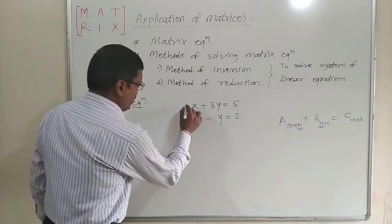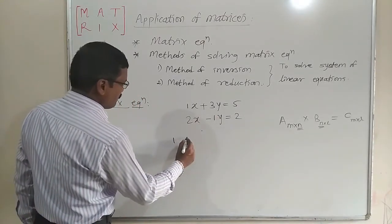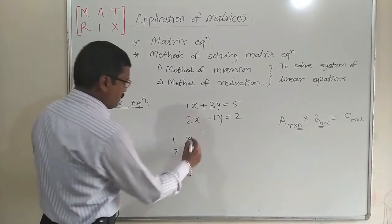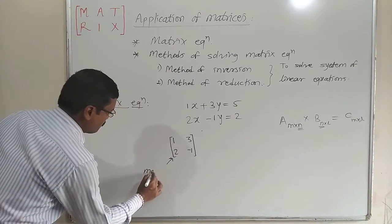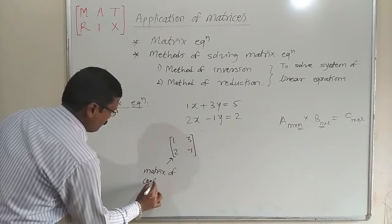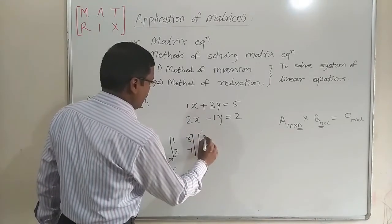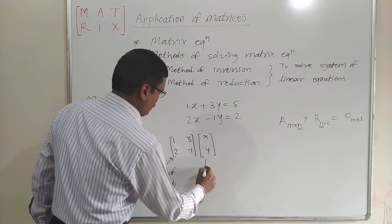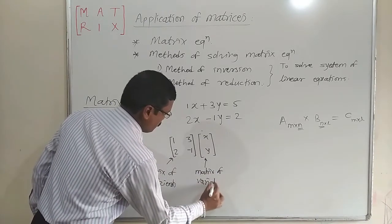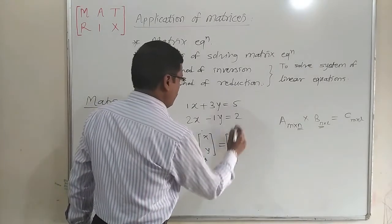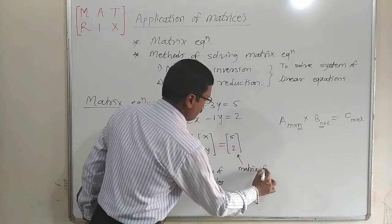Let us use that rule here. The coefficient of x is 1. If we write the coefficients of x and y from these equations, we can write them as 1, 3, 2, minus 1. If we form the matrix of these coefficients, we call it the matrix of coefficients. If we write the column matrix as x, y, we call it the matrix of variables. And it is equal to the column matrix of constants, that is 5 and 2. We call this the matrix of constants.